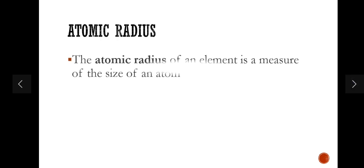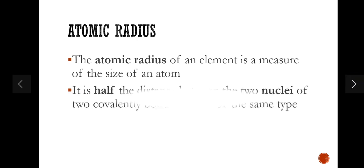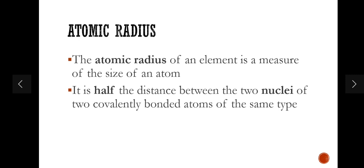We should first be familiar with the definition of what we mean by atomic radius. Basically, the atomic radius of an element is a measure of the size of an atom. It is half the distance between the two nuclei of two covalently bonded atoms of the same element. Let's have a look at the diagrammatic snapshot of how we can measure the atomic radius of an element.